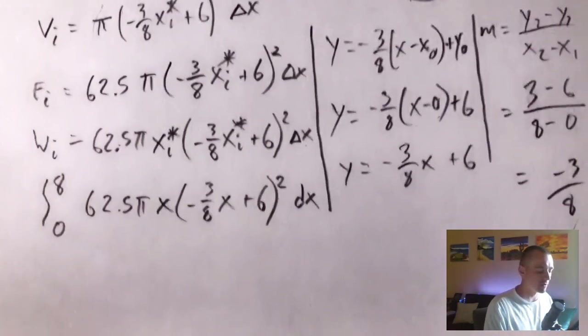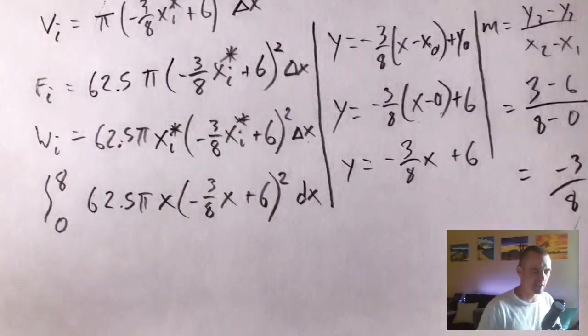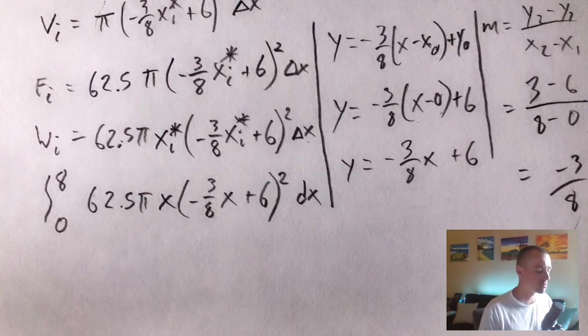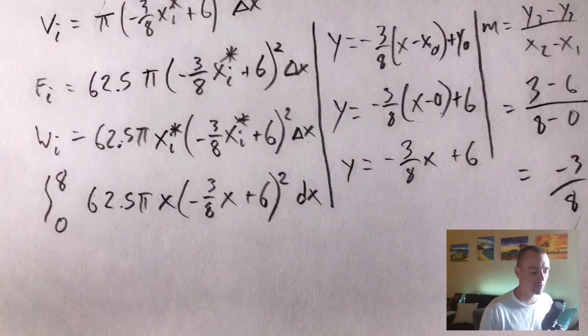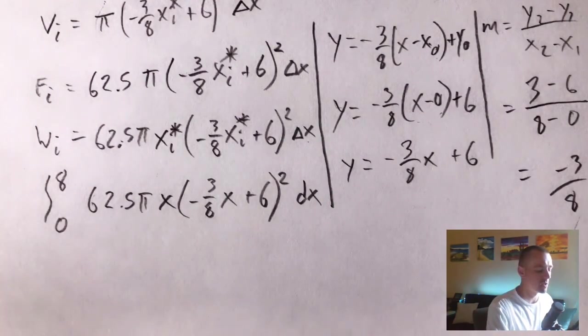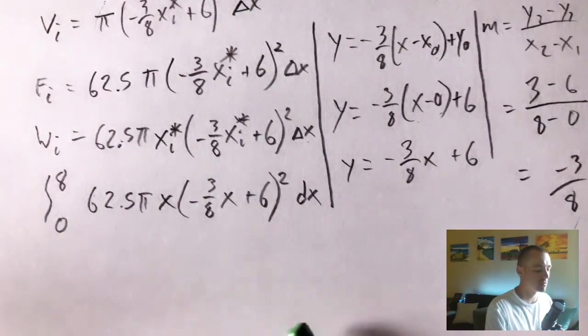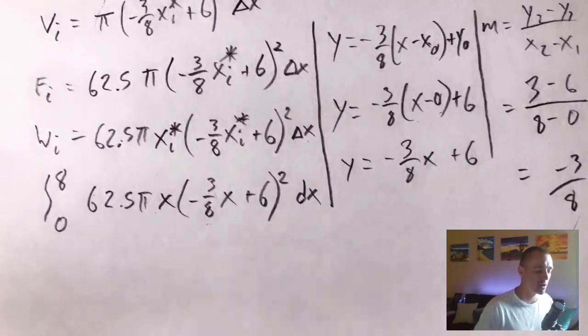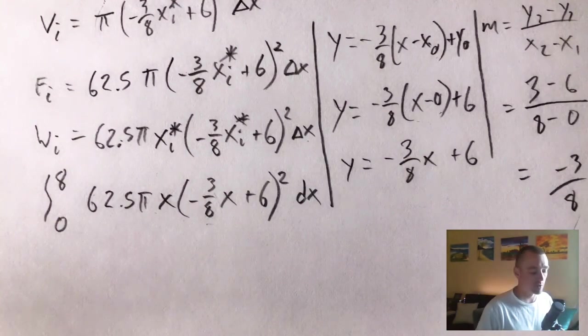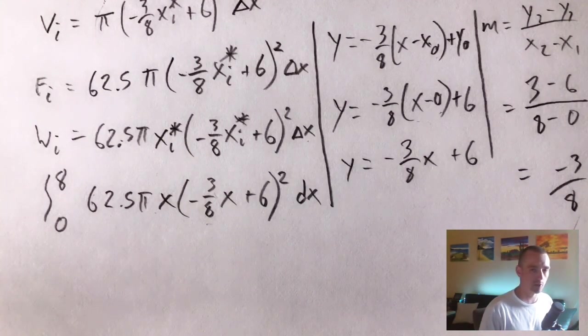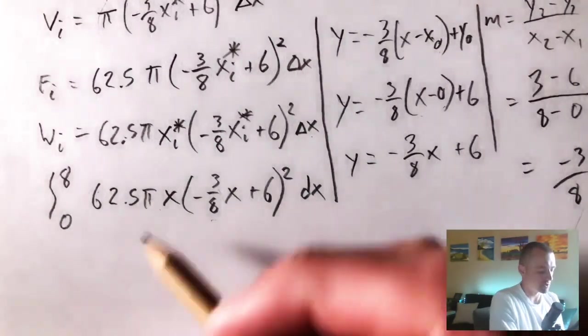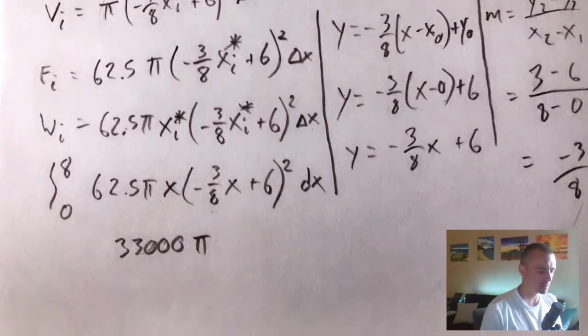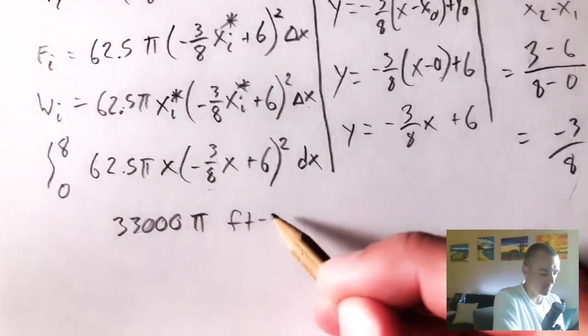Basically, I'm not going to show you all the steps of evaluating this integral. You can do that on your own, I would definitely recommend doing that on your own. But if you do evaluate this integral, integrate this function, just expanding out this and then distributing this throughout, giving you a polynomial that you can then just use the power rule to integrate, and then evaluating that from zero to eight, it's just going to give you 33,000 pi. And then the units on this is going to be feet pounds.